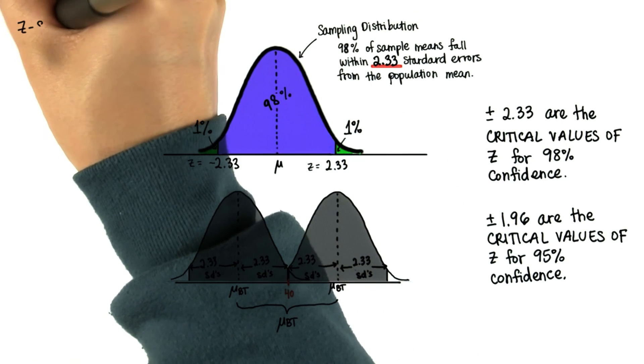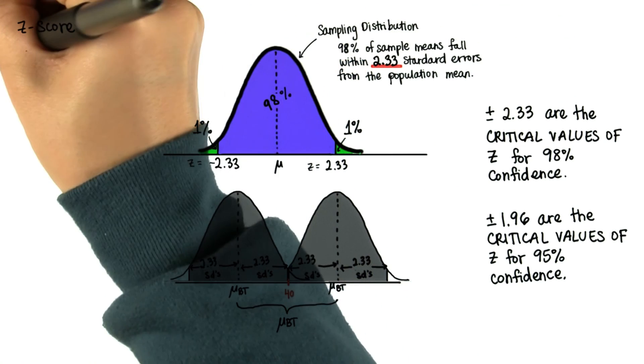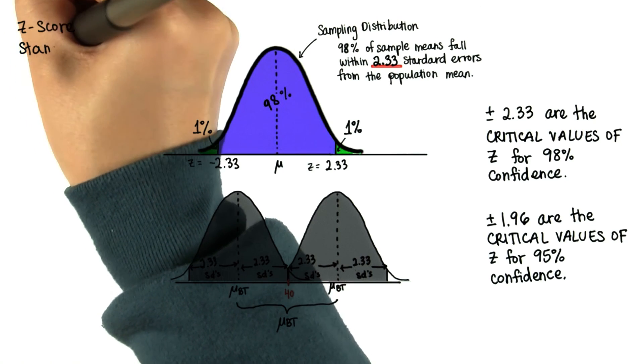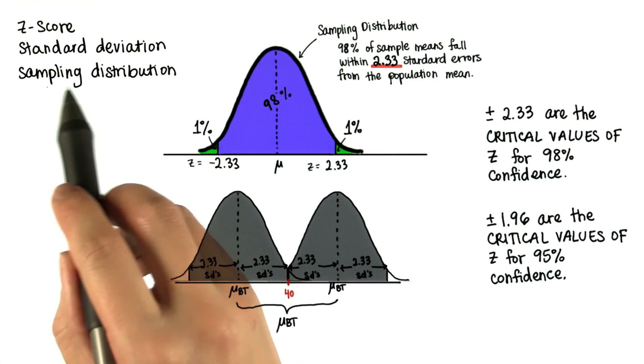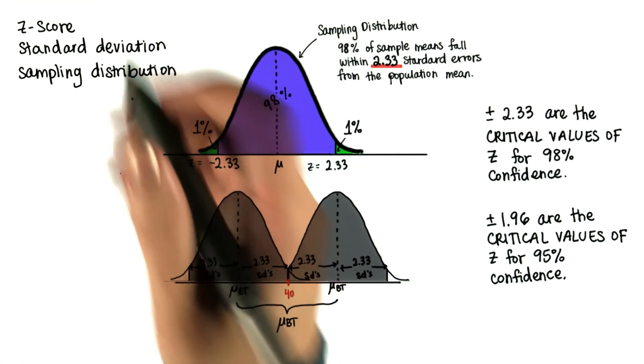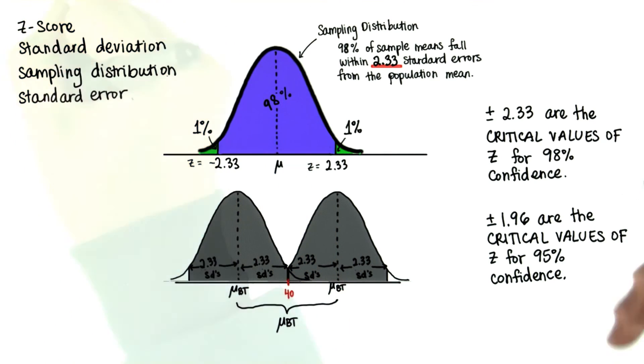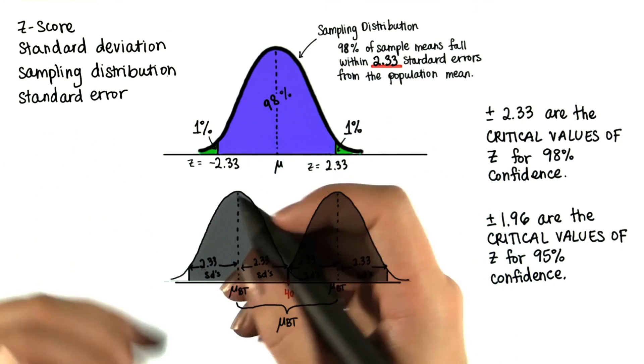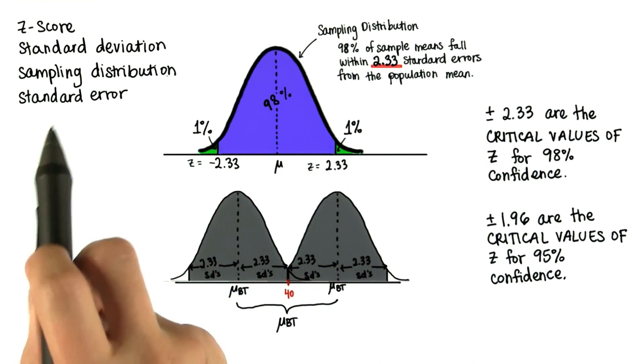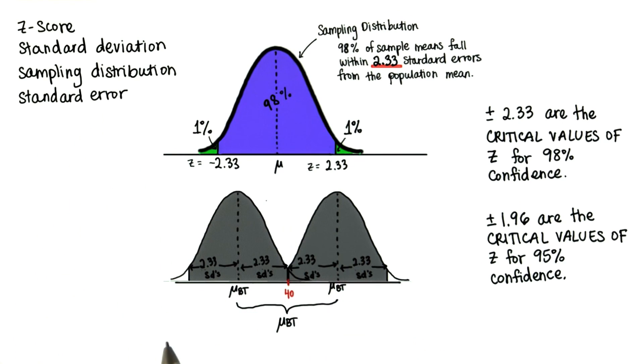So you have to remember what a z score is, and what the standard deviation is, the sampling distribution. And you have to remember that the standard deviation of the sampling distribution is called the standard error. And then you need to be able to express values of sample means in terms of standard errors away from the population mean.